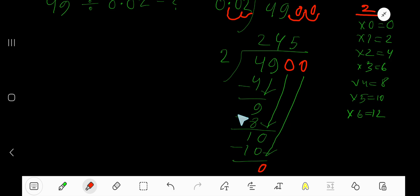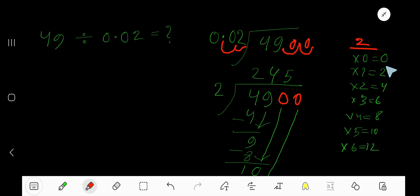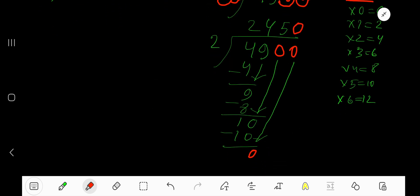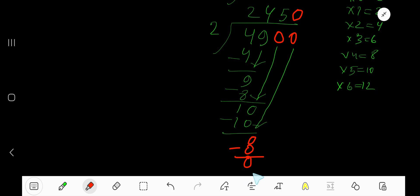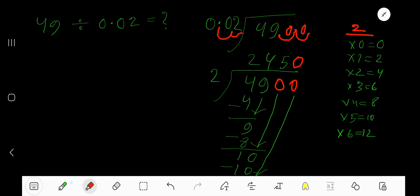0 means 0. 2 goes into 0 how many times? 0 times. 0 times 2 is 0. Subtract: you're also getting 0 as a remainder, and there are no more digits in the dividend, so we can stop. Our answer is 2,450.